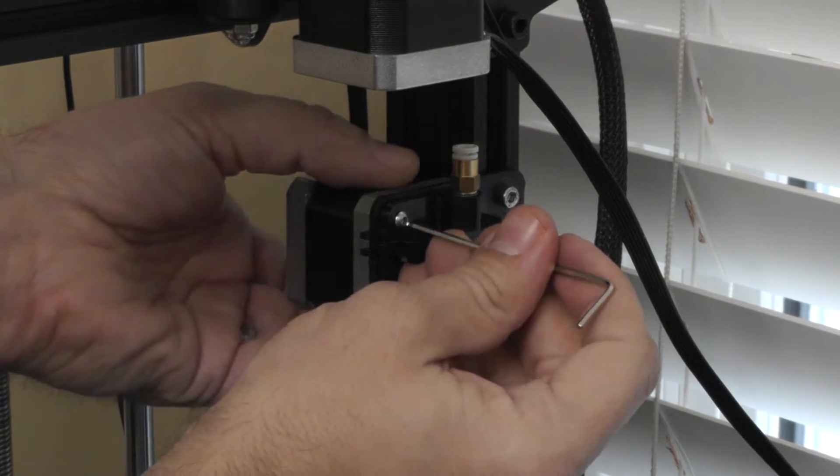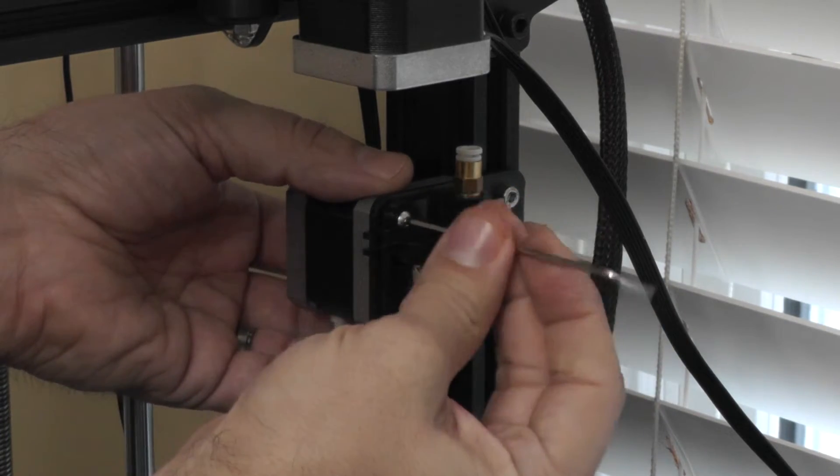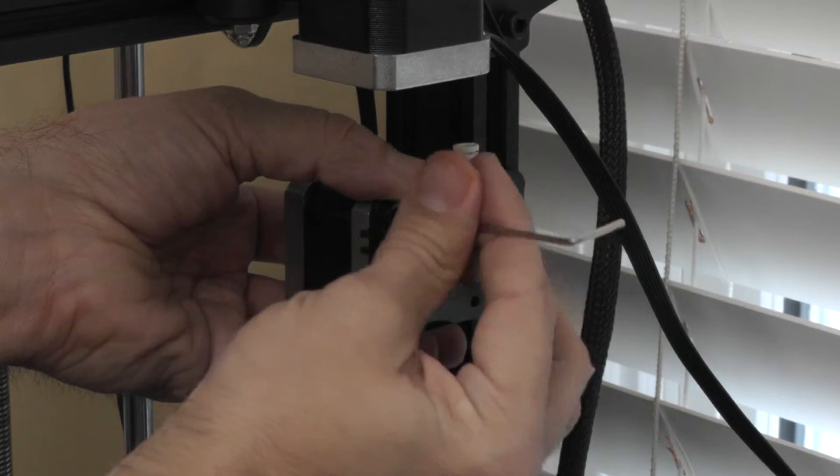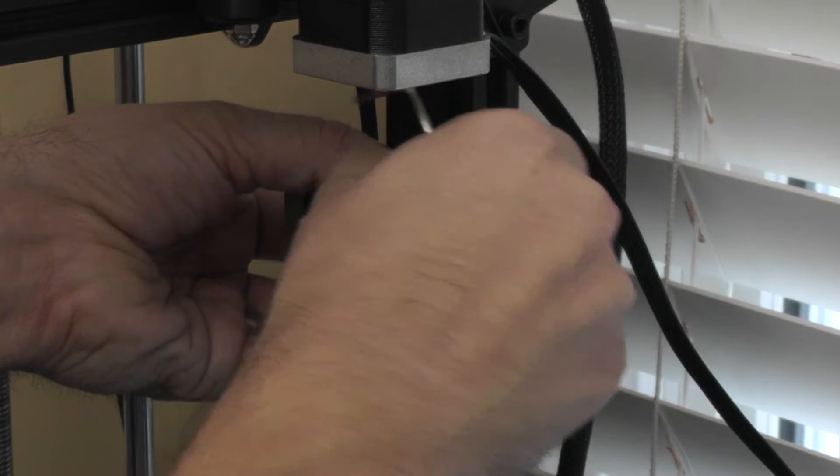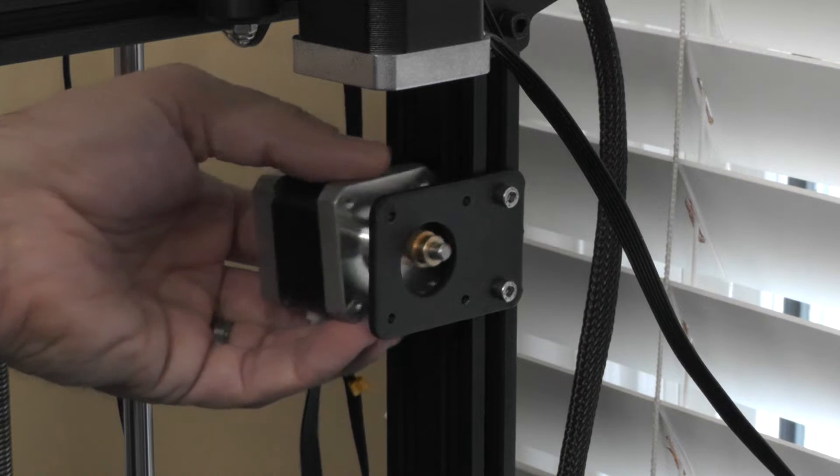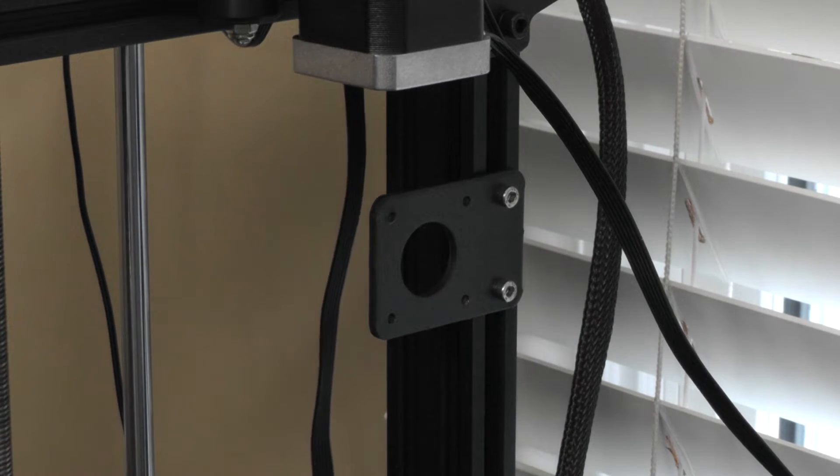And then for the final screw, make sure that you're holding your extruder motor while you take this off. Otherwise, it will fall. So that you don't lose them when the screw comes out. Then you pull this screw out. Take the front of the extruder off, and then rest your extruder motor on your build plate.